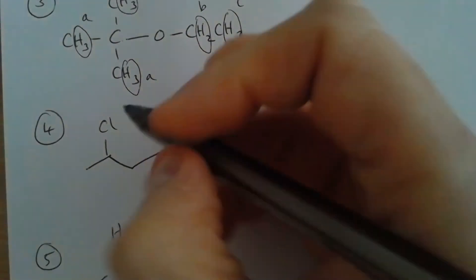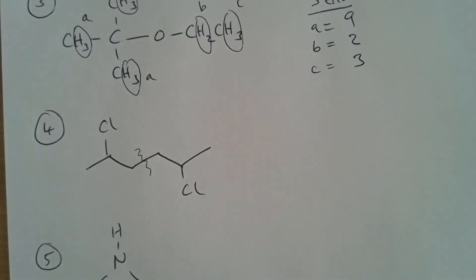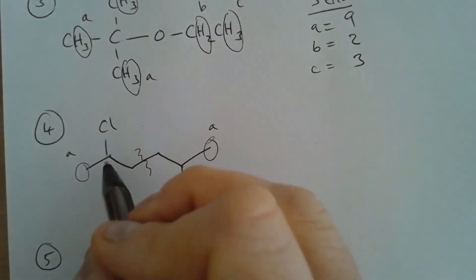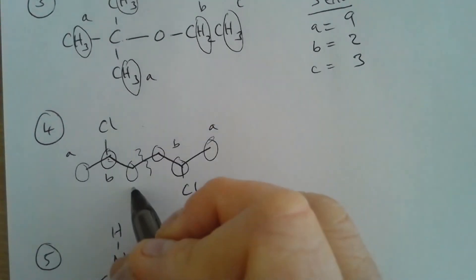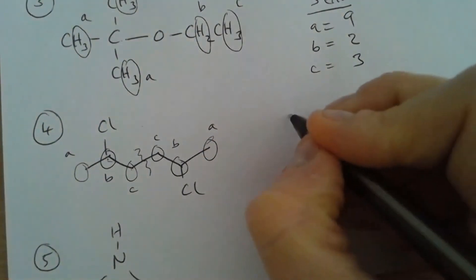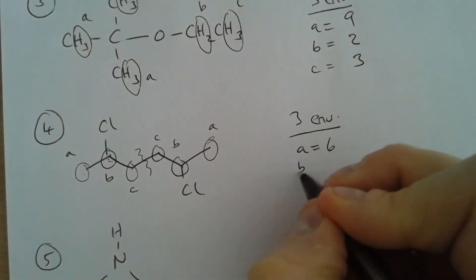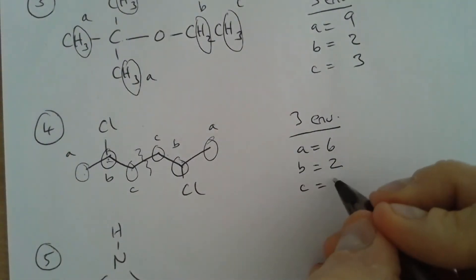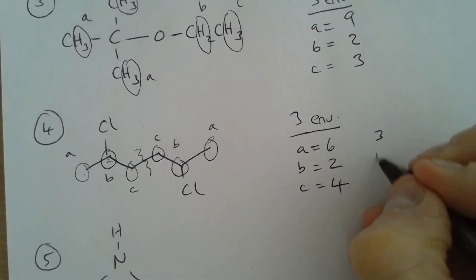Question four: all bonds can rotate, and the axis of symmetry means anything on one side matches the other. The terminal CH3 groups are environment A. The single hydrogen atoms on the inner carbons are environment B. The CH2 groups give environment C. So there are three environments: A with an integral of six, B with an integral of two, and C with an integral of four — giving a ratio of three to one to two.